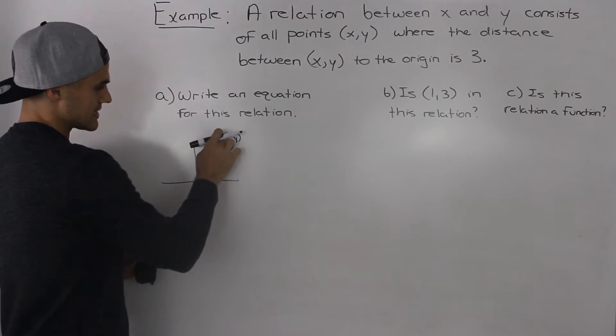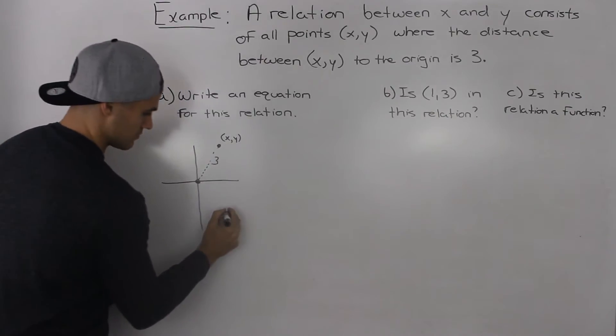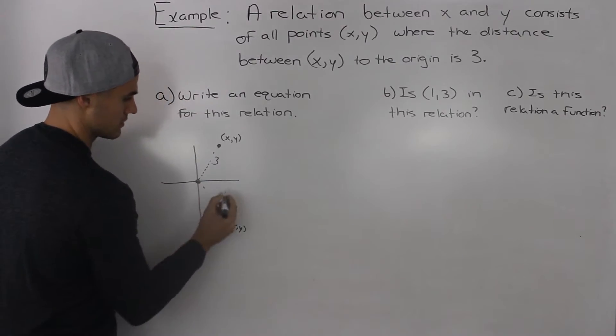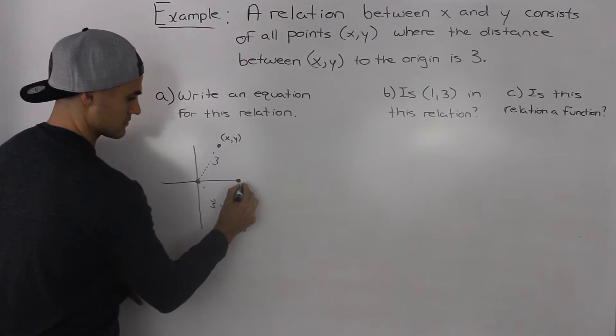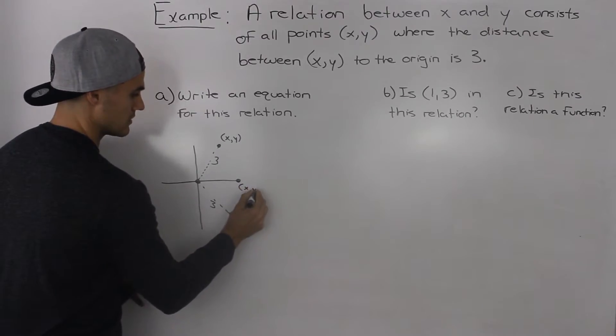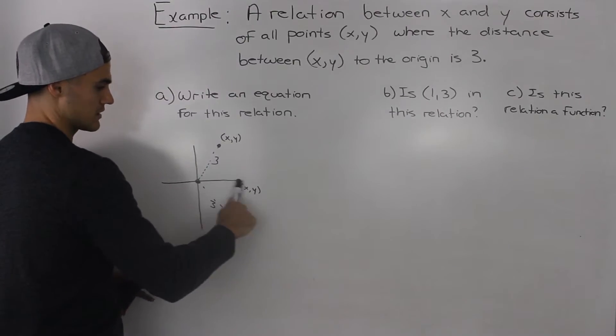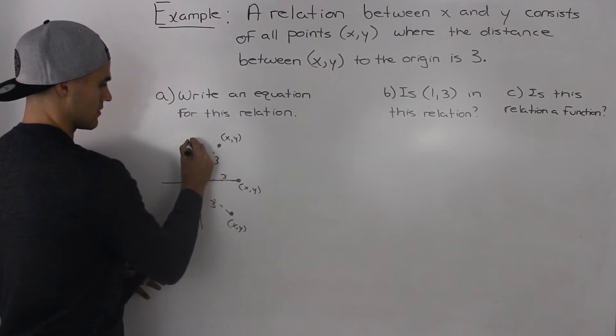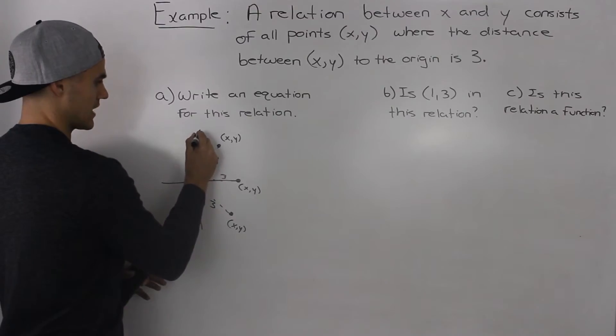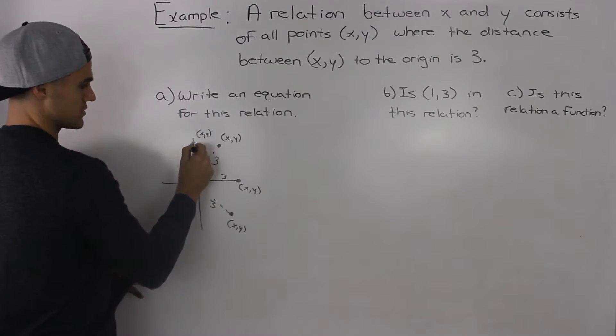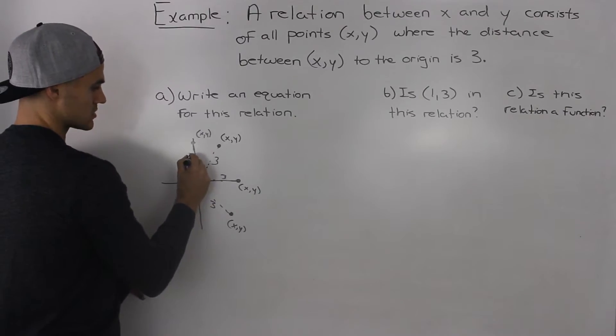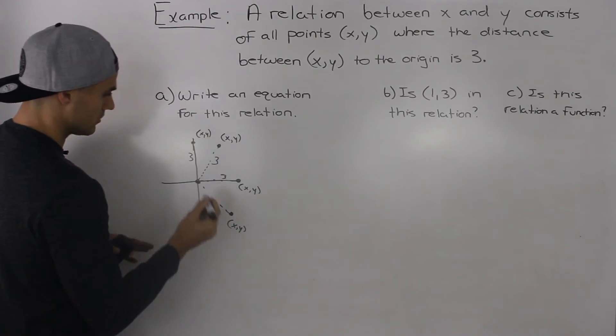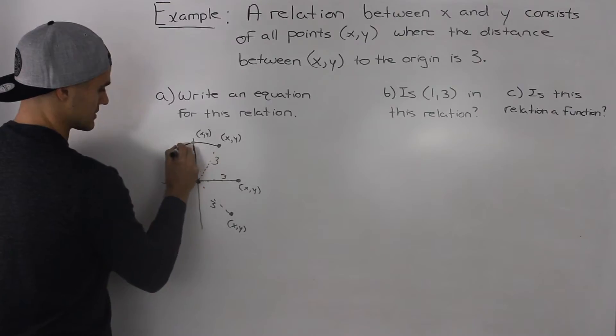However, notice that this x and y can be anywhere, right? It can be down here even, and the distance between that point and this point has to be 3. It could also be on the axis here, right? So this can be x and y. The y value would be 0 because this represents a y-intercept. So this distance has to be 3 all the way around. So if you notice, basically this forms a circle.